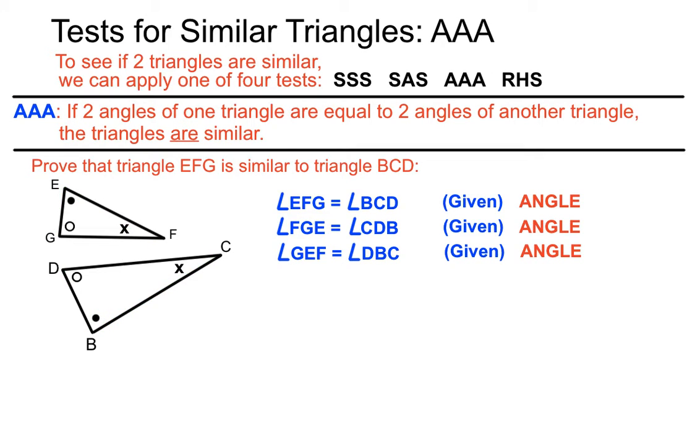So we're clearly passing the angle, angle, angle test for similar triangles here. So we just need to make our concluding statement. Triangle EFG is similar to triangle BCD because it's passed the AAA test.